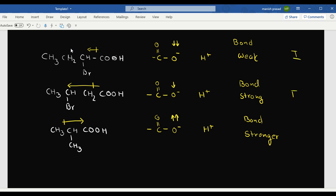Now you can yourself tell me which one is the weakest, which one is the strongest and arrange it. Which one will be the weakest acid? The third one will be the weakest because this bond is strongest. After that, the second one will be the next weaker acid, and the strongest acid will be the first one.